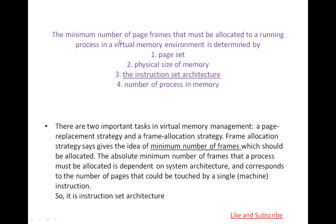Next question: The minimum number of frames that must be allocated to a running process in a virtual memory environment is determined by: working set, physical size of memory, the instruction set architecture, or number of processes in memory. According to the answer, there are two important tasks in virtual memory management: a page replacement strategy and a frame allocation strategy. Frame allocation strategy gives the idea of the minimum number of frames which should be allocated. The accurate minimum number of frames that a process must be allocated is dependent on system architecture, corresponding to the number of pages that should be accessed by a single machine instruction. So the answer is the instruction set architecture.